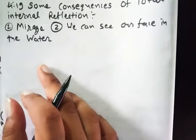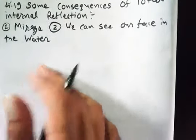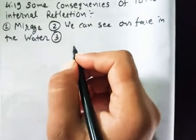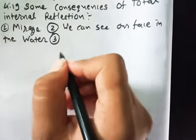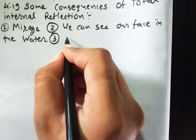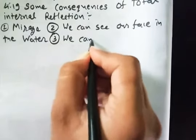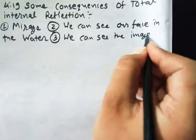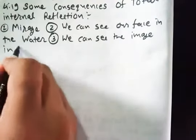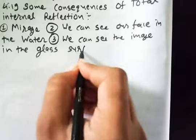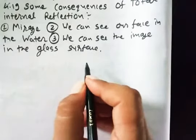Now the third one. The third one is from glass. Sometimes we can see the image in the glass surface. How can we see it? Because of total reflection.